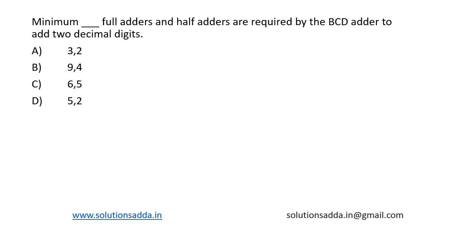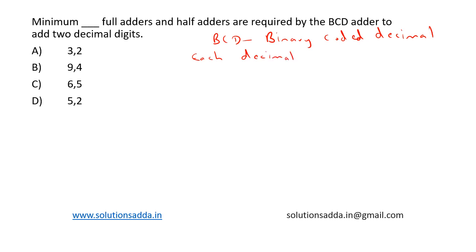This is a question from digital logic: the minimum number of full adders and half adders required by a BCD adder to add two decimal digits. BCD stands for Binary Coded Decimal. In BCD, each decimal digit is represented by a four-bit binary number, so we are asked to find the adder count for two decimal digits.